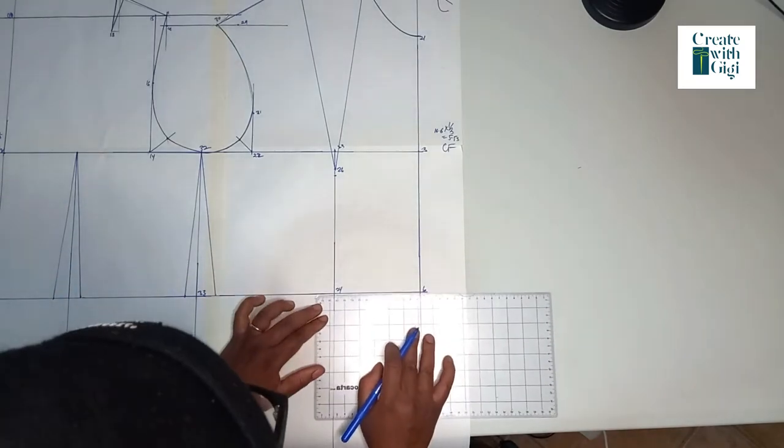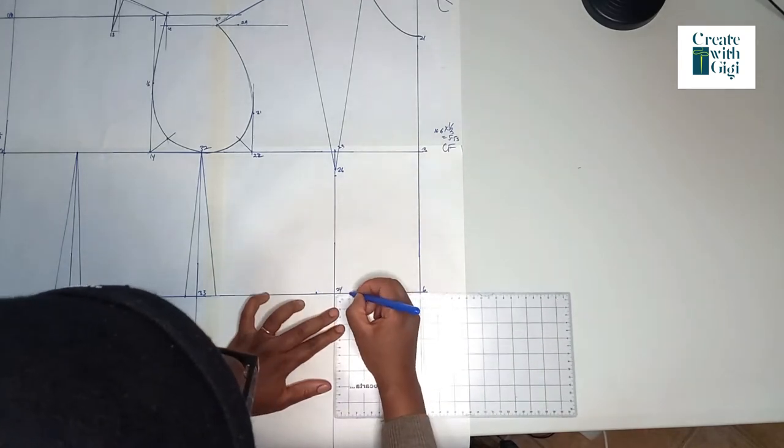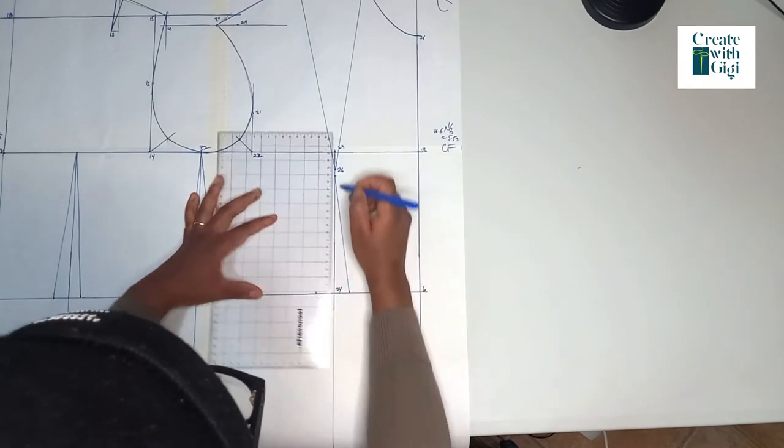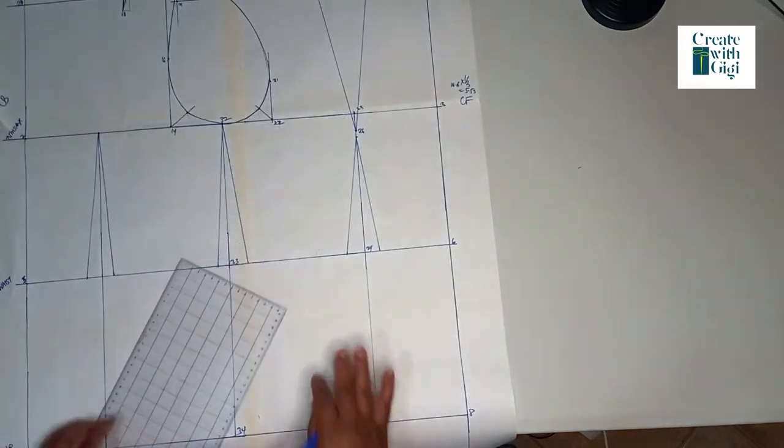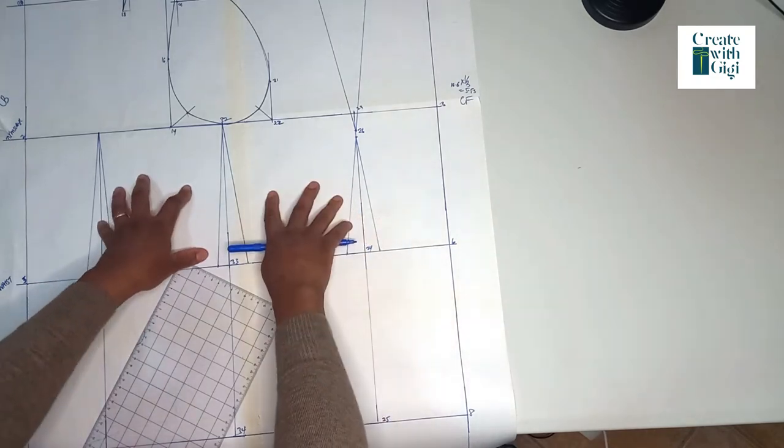From the left-hand side, we draw out 2.5 centimeters and 2 centimeters from the right-hand side, and then we join it to that dropped line. That is it if you want to leave your bodice block at this point.